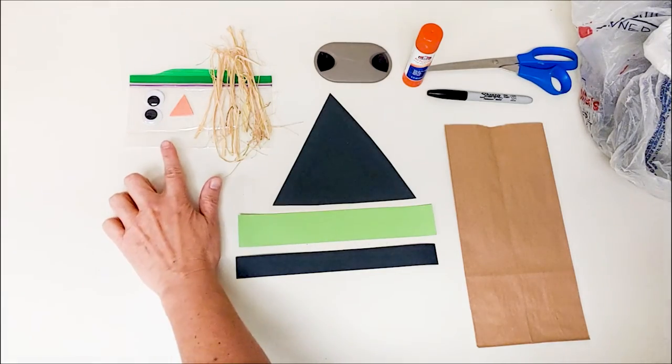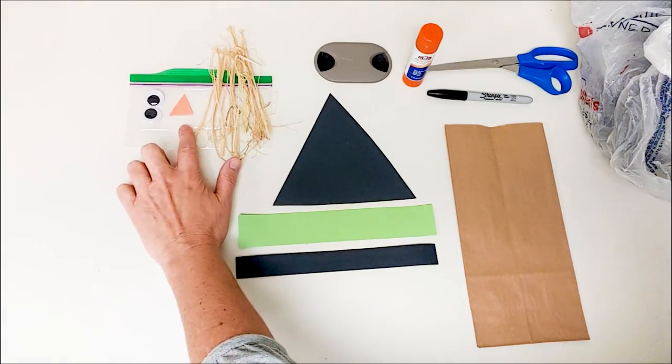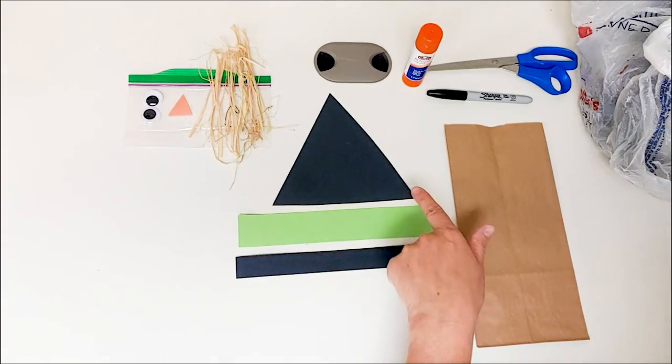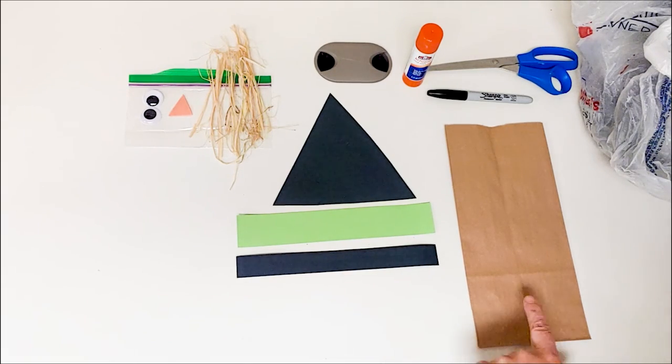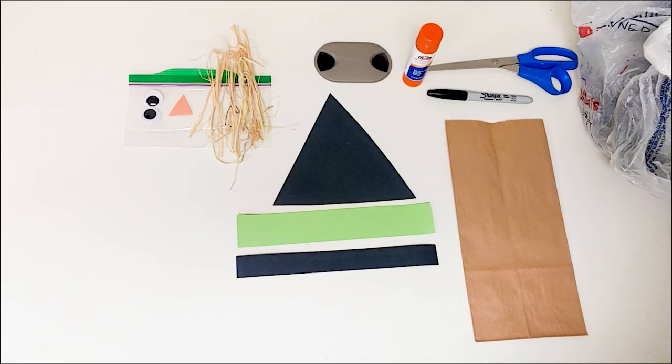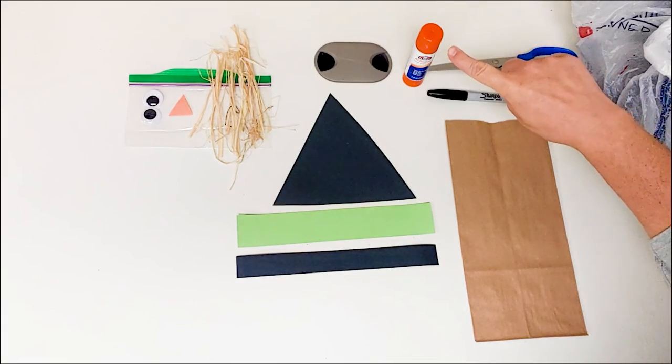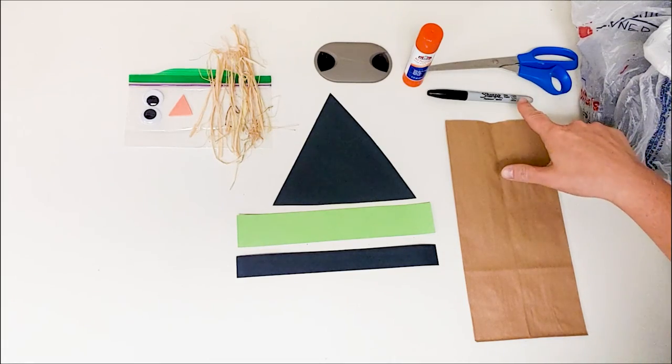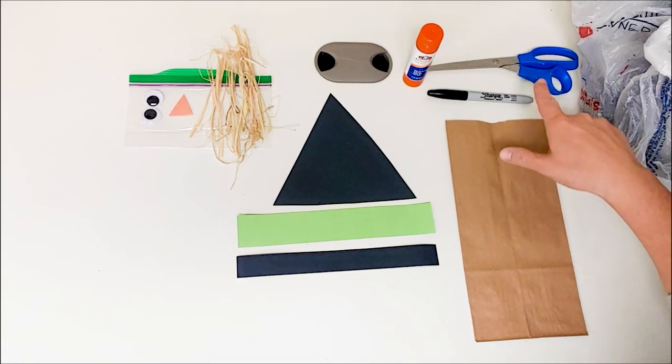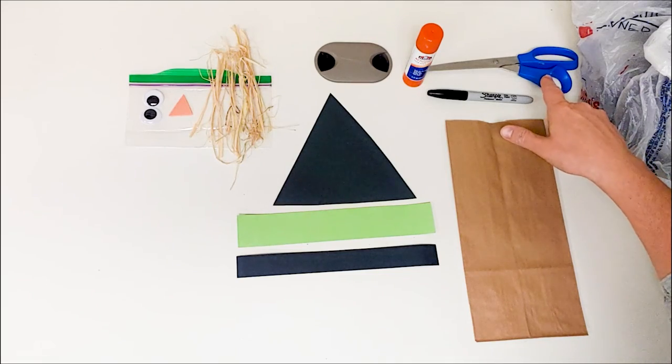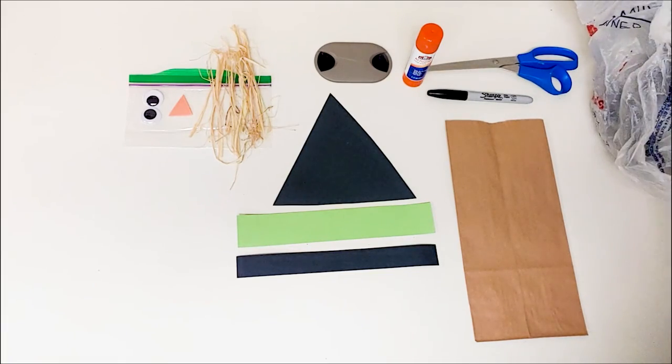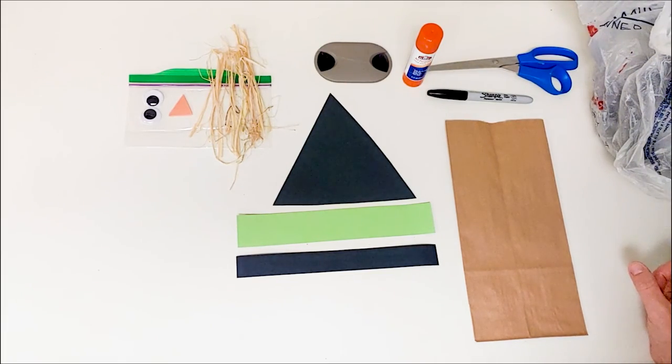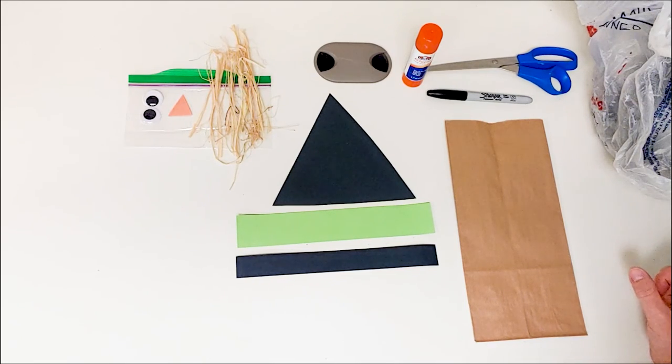So in your box you are going to have a baggie with eyes, a nose, and the hair. You're going to have a black triangle, a green strip of paper, a black strip of paper, and a brown lunch bag. What you want to go ahead and grab from home is a glue stick or a bottle of glue, a sharpie any color that you want, a pair of scissors, and then something to fill the bag. I'm going to use grocery bags - you can use grocery bags, tissue paper, scrap paper, anything you have laying around the house.